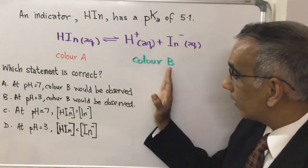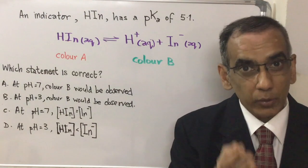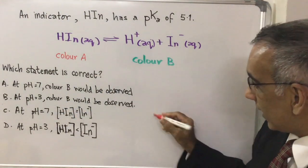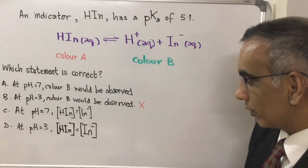So if you have quite a high concentration of hydrogen ions then it will push this equilibrium in this direction. So you're going to have color A. So pH 3 color B would be observed, you can eliminate as a possible choice.